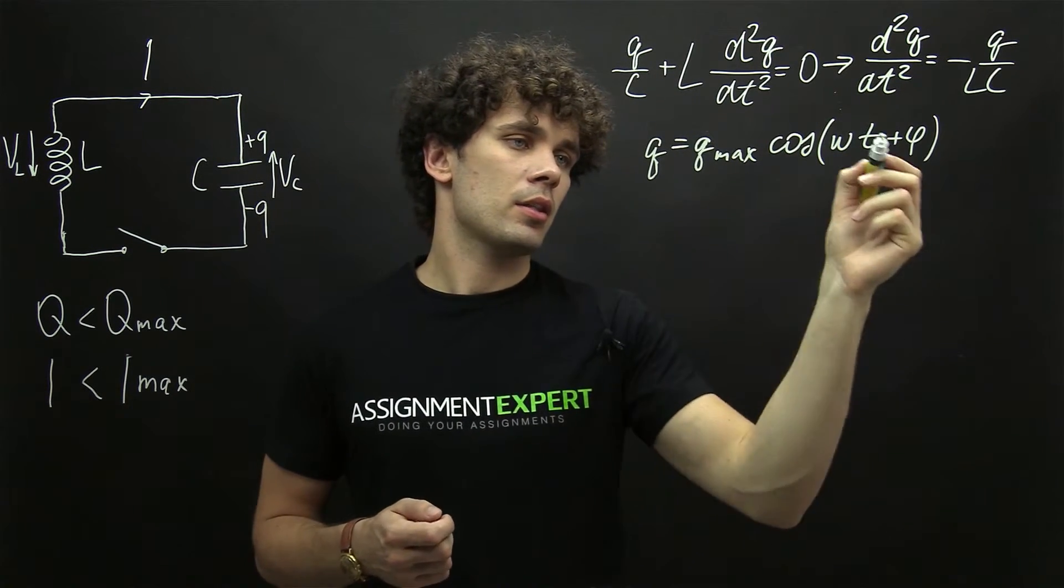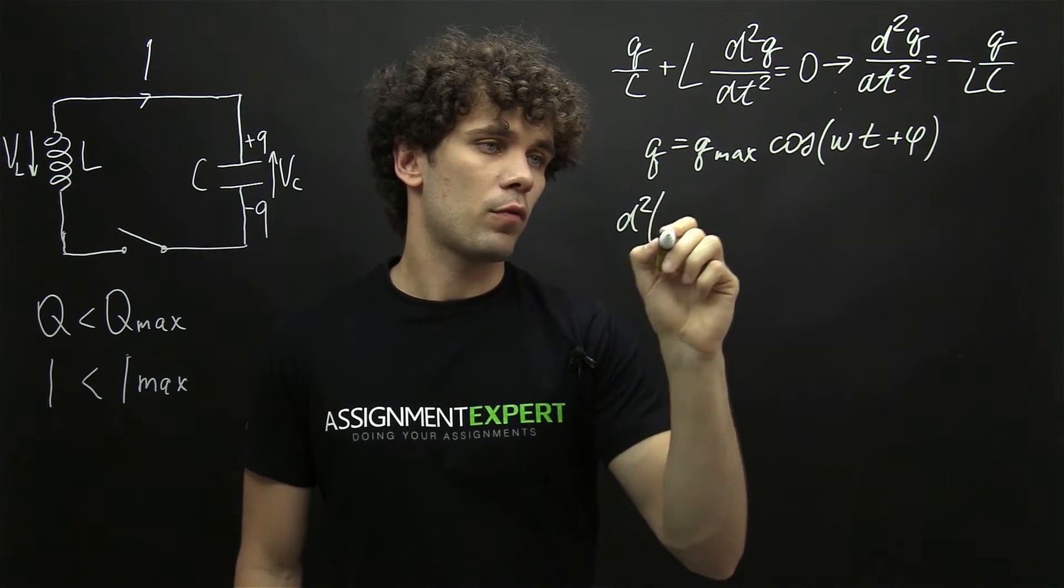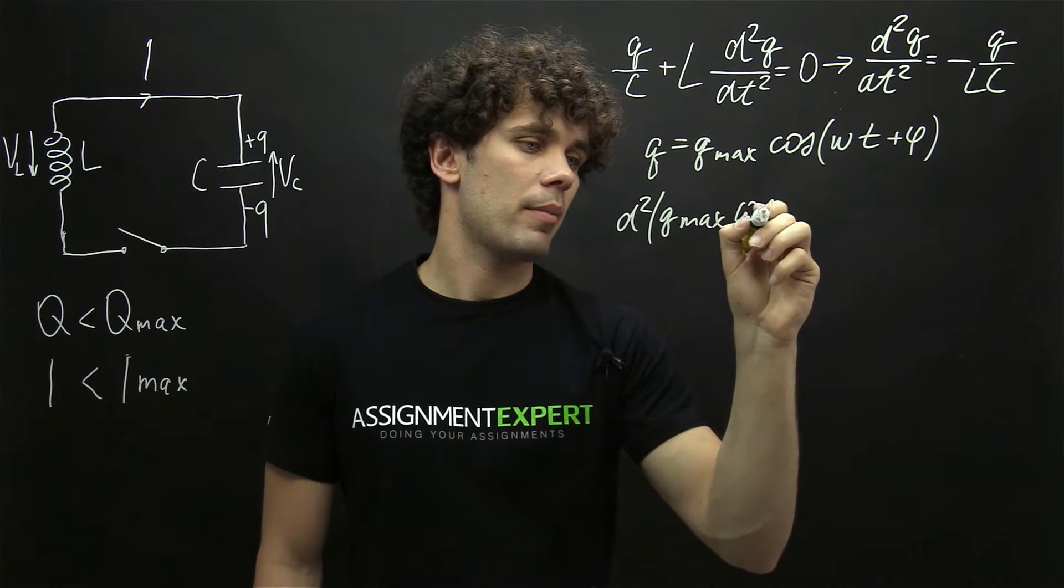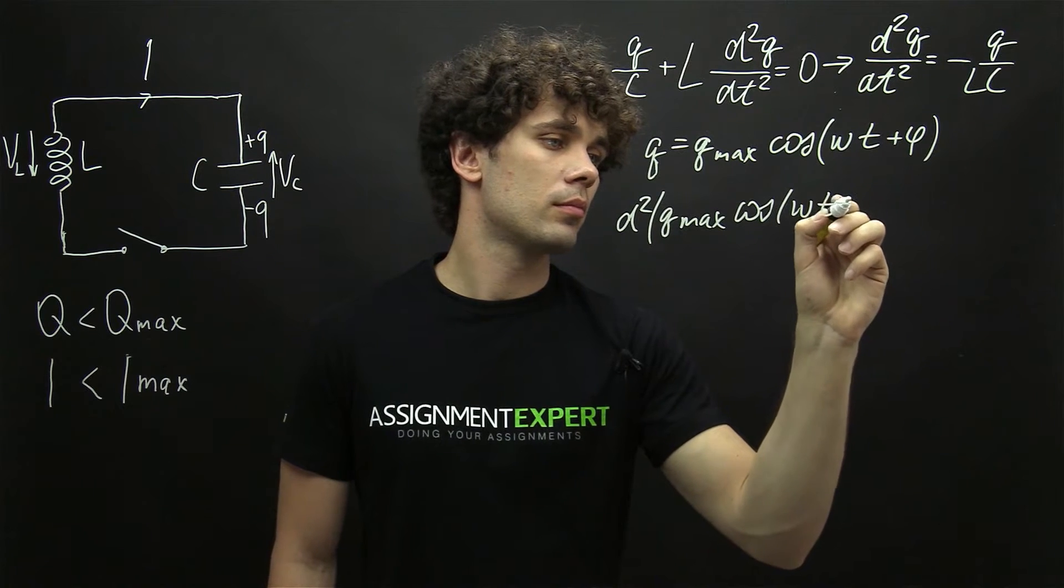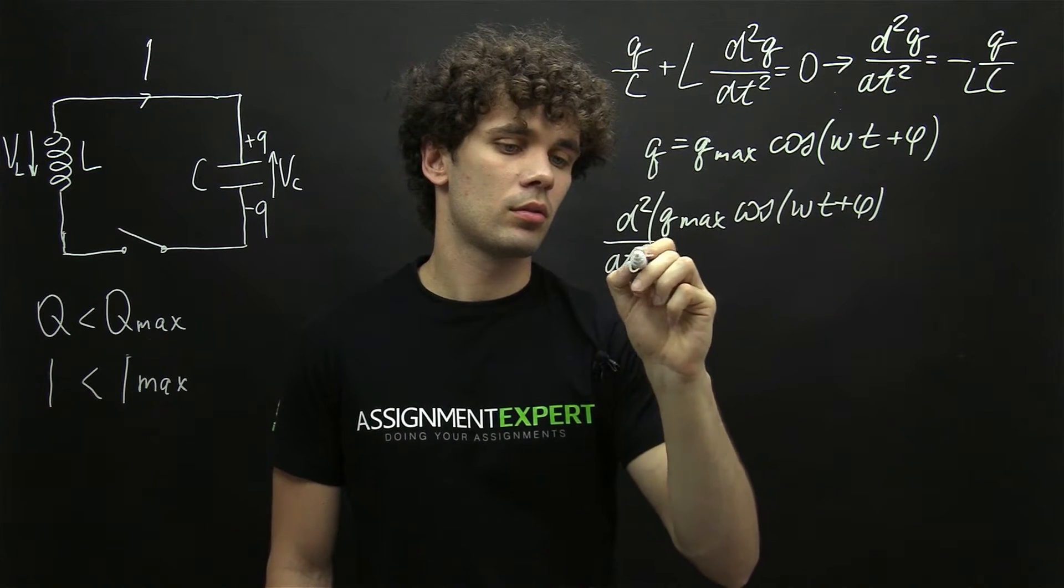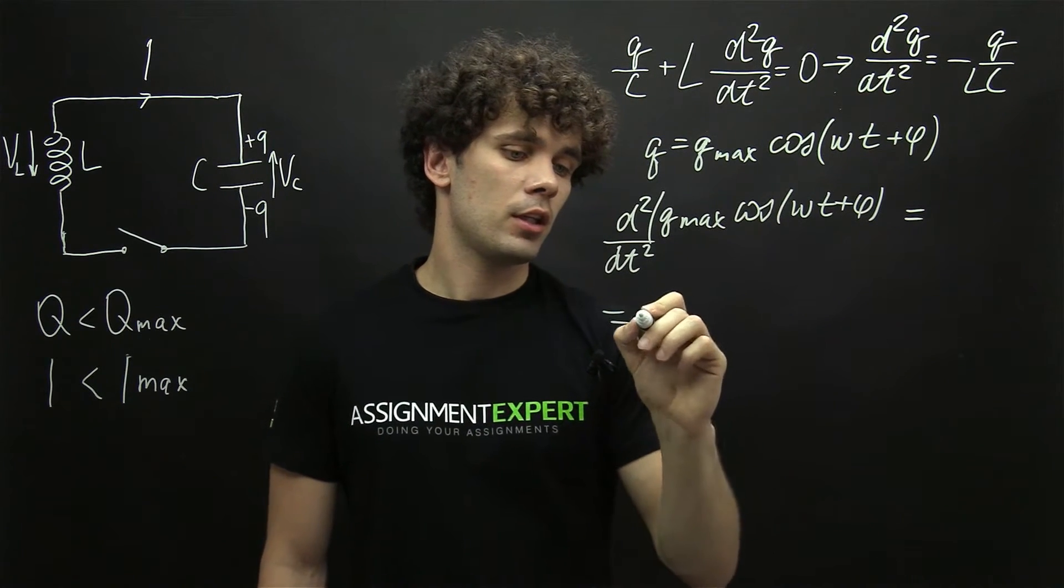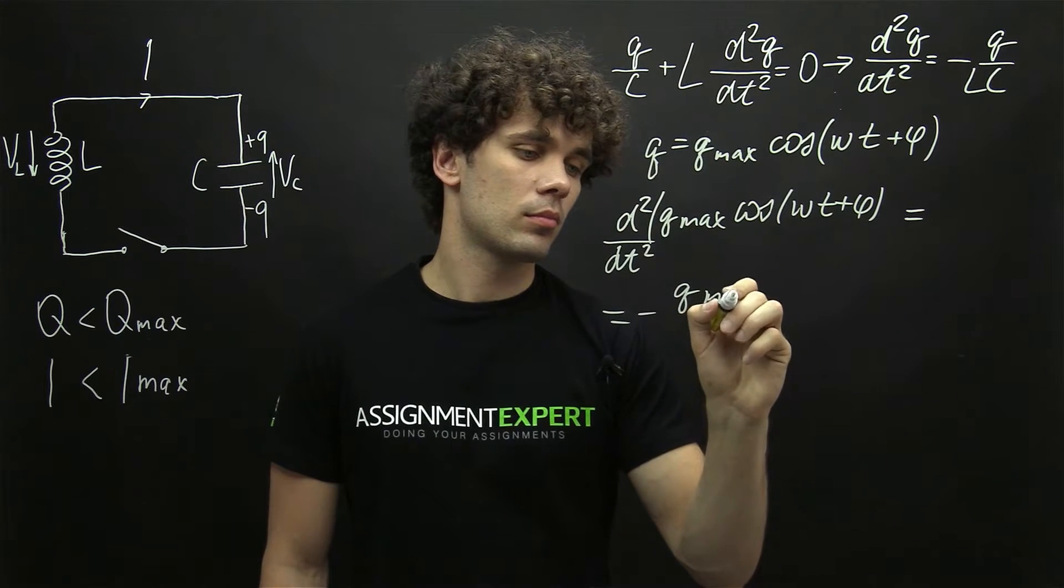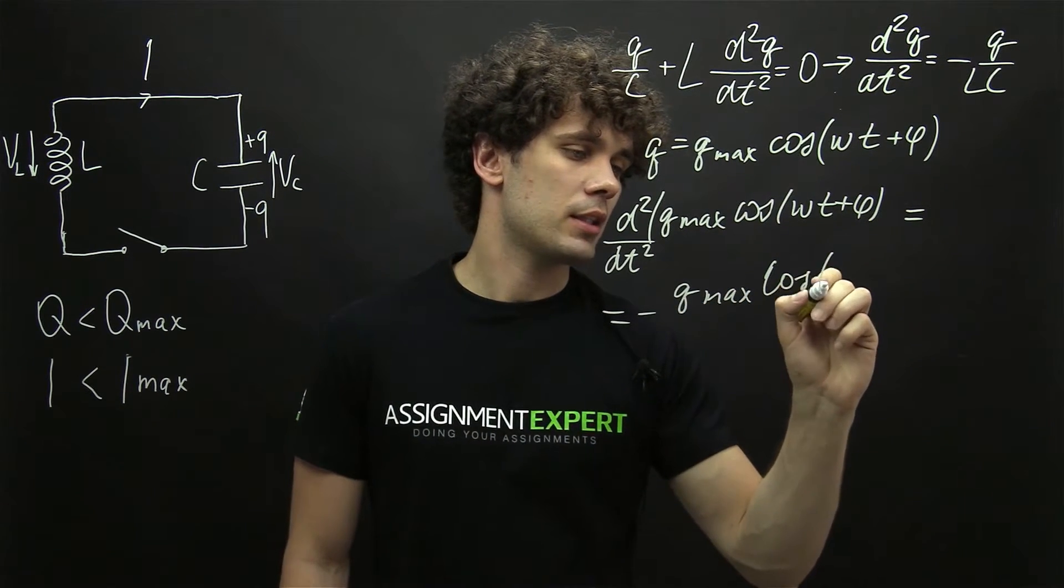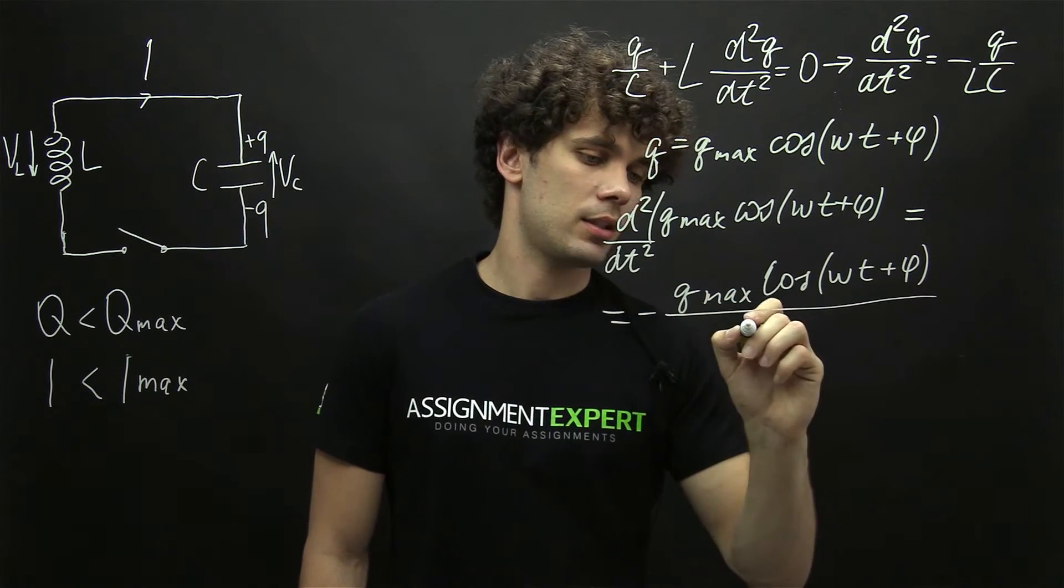Now let's take this expression into our formula with derivatives. We have second derivative of Q max times cosine of omega t plus phi, and on the right side we have negative Q max times cosine of omega t plus phi, divided by LC.